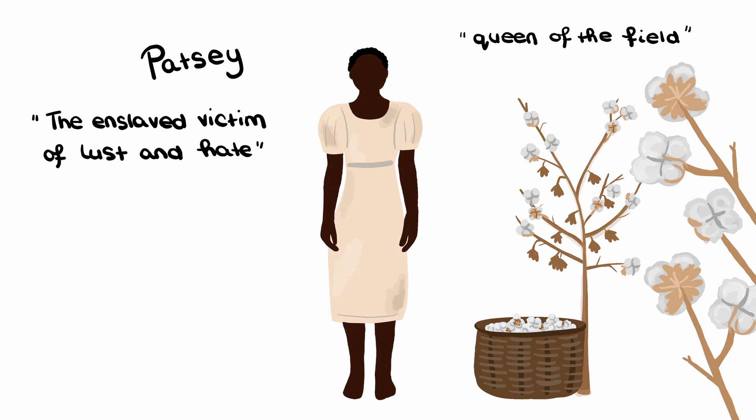Patsy's master frequently rapes her, and she also has to endure the cruelty of Master Epps' wife, who is jealous of her and often orders her husband to whip Patsy. An important event in the story is when Patsy receives the most merciless beating that Solomon has ever witnessed. She went to a nearby plantation to get some soap, is accused of sexual misbehaviour, and is whipped in the most gruesome manner while tied naked to four stakes in the ground.